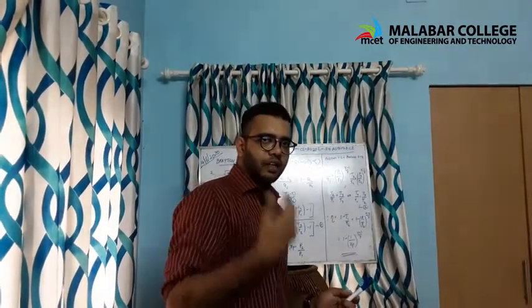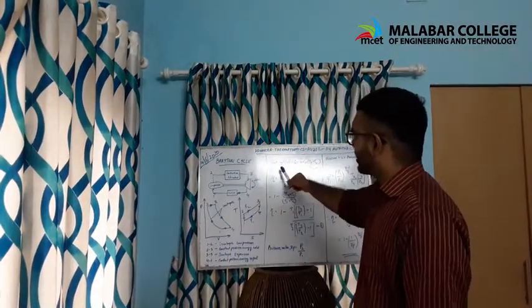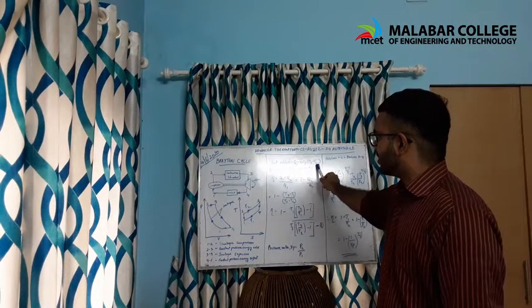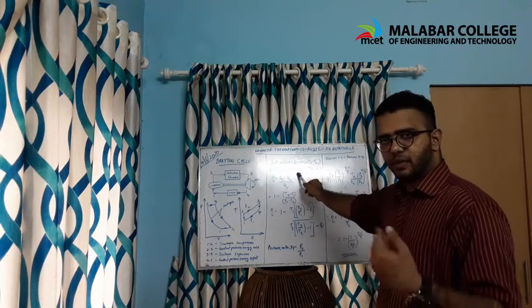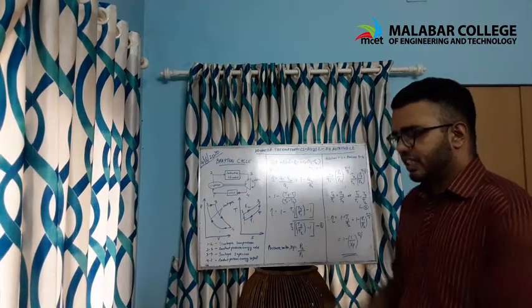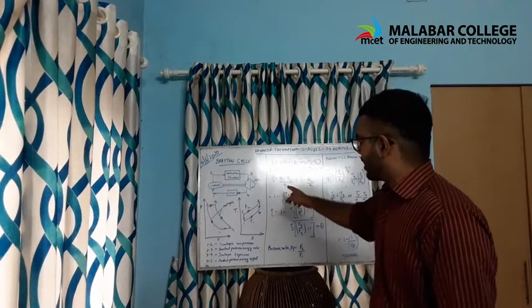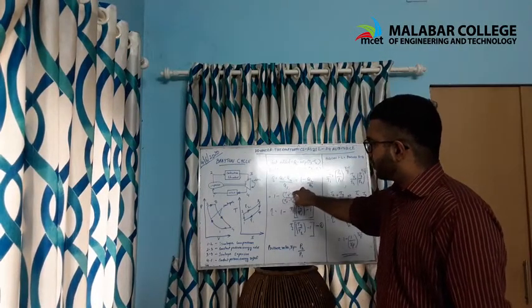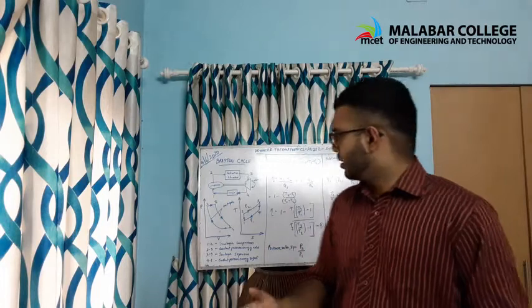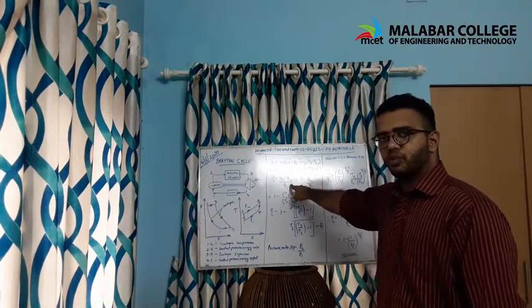Now let's calculate the efficiency of the Brayton cycle. The heat added to the system is Q1 = mCp(T3 − T2), and the heat rejected is Q2 = mCp(T4 − T1). Efficiency is output divided by input, so it equals work done divided by heat supplied, giving: η = 1 − (Q1 − Q2) / Q1.